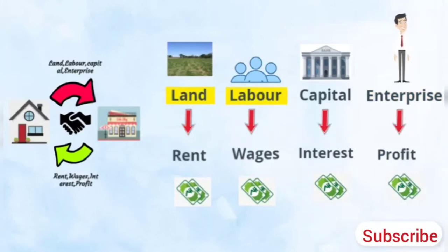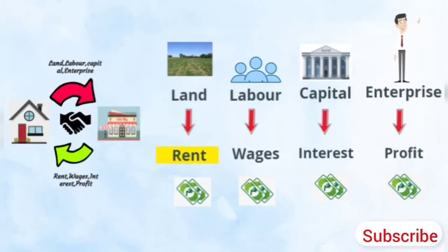Land, labor, capital, and enterprise are together known as factors of production, which helps in the production of goods and services. Rent, wages, interest, and profits are known as factor payments, which are given to households for hiring factor services.